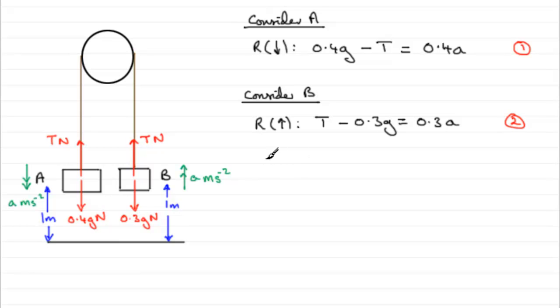So, what I'm going to do is equation 1, then, plus equation 2. Equation 1 plus equation 2 gives us, well, minus T and T. Well, that cancels. So, we've got 0.4G minus 0.3G, so therefore, we have 0.1G. And that's going to equal 0.4A plus 0.3A, which is 0.7A.